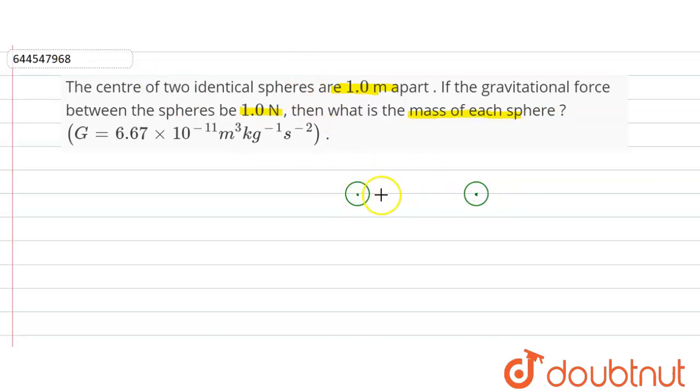So this is the force between them. Value is how much? One Newton is given. And this distance is how much? One meter. Distance between them is given, how much? One meter. And if the gravitational force between the spheres is one Newton is given.